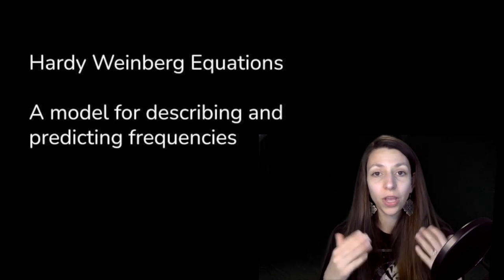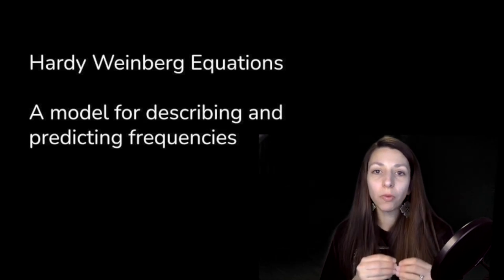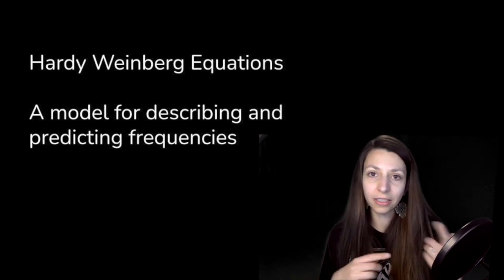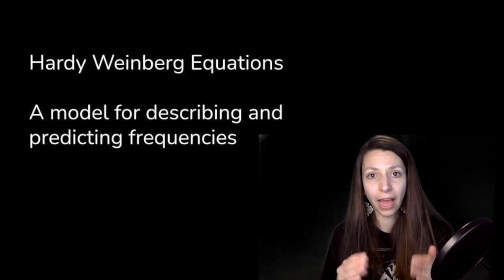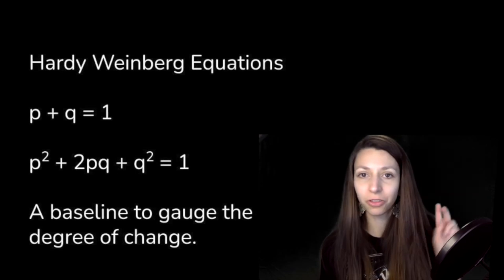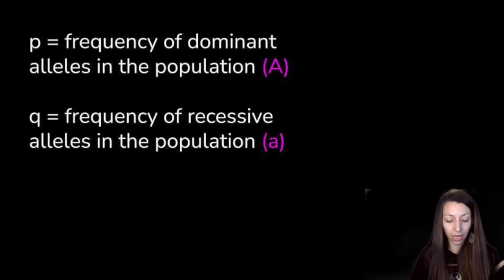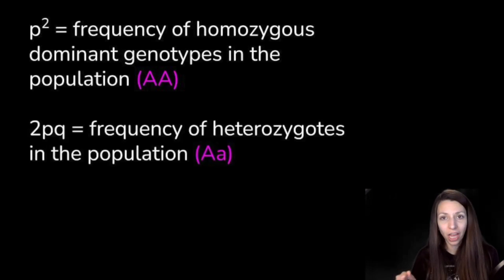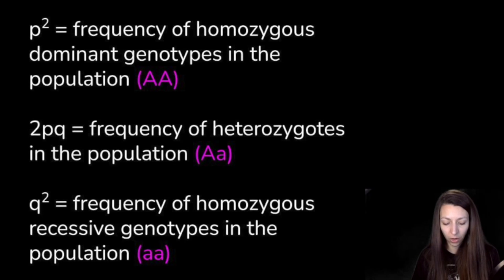Hardy-Weinberg is actually an equation that we can use to determine the frequency of alleles in a population at a given time. Hardy-Weinberg is used as a model for describing and predicting allelic frequencies in non-evolving populations. It represents ideal populations that aren't changing, and since natural populations do change, Hardy-Weinberg provides us with a baseline to gauge that degree of change. There's two equations you're going to need to know. These are provided on the formula sheet. P is the frequency of the dominant allele in a population. Q represents the frequency of the recessive allele. P squared is the frequency of homozygous dominant genotypes. 2PQ is the frequency of the heterozygous genotype. And Q squared represents the frequency of the homozygous recessive genotype in a population.